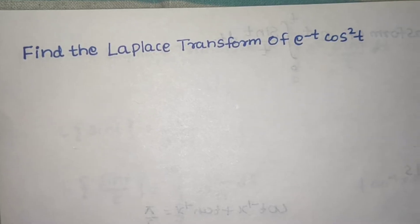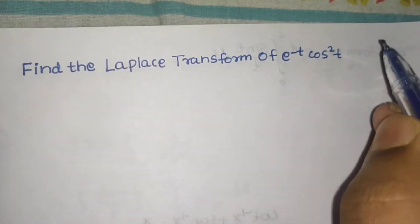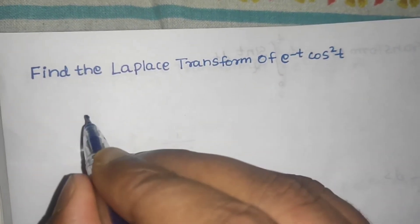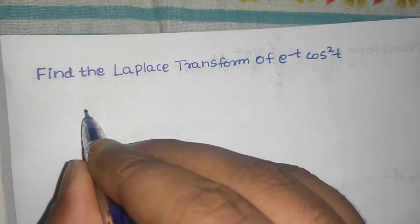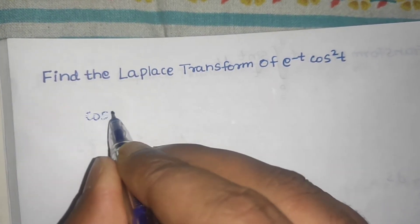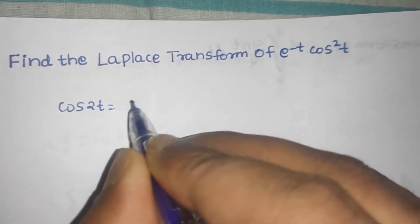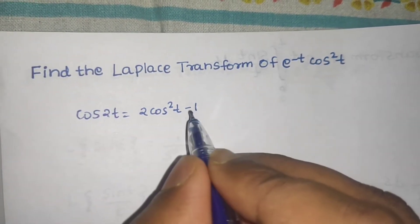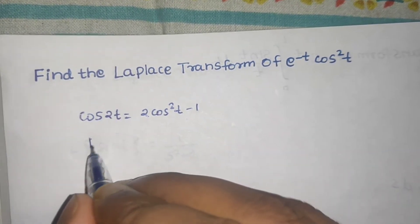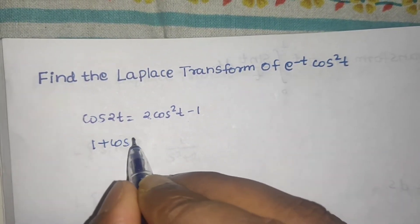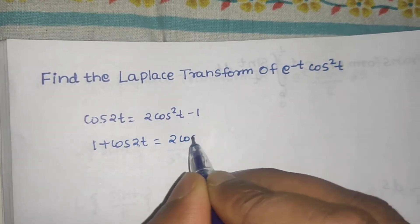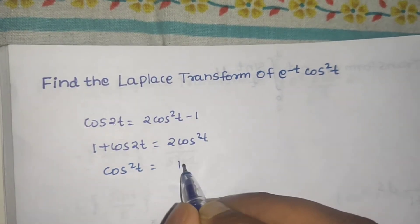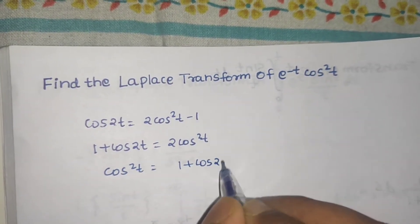So as usual, we will go with the basics and first of all, we will have to convert cos squared t using this formula. We know that cos 2t equals 2 cos squared t minus 1. So if we take 1 to the other side, 1 plus cos 2t equals 2 cos squared t. So cos squared t is equal to 1 plus cos 2t divided by 2.